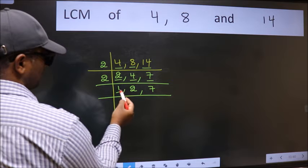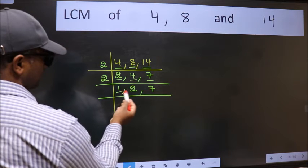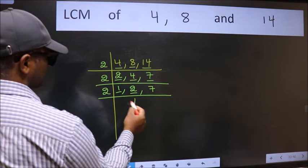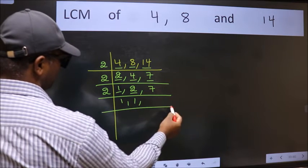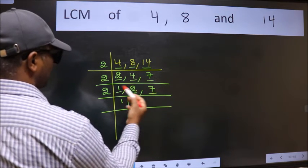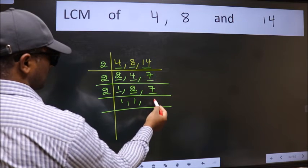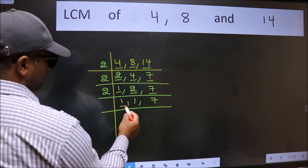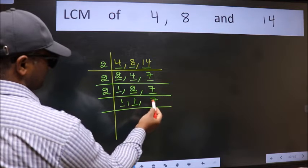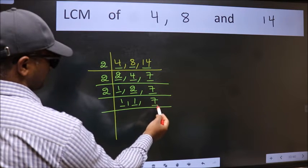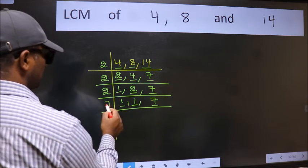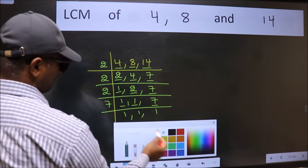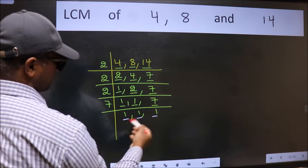Now we got 1 here, so focus on the next number 2. 2 is a prime number so 2×1 is 2. The other number 7 is not divisible by 2, so we write it down as it is. Now we got 1 here and here. So focus on the next number 7. 7 is a prime number so 7×1 is 7. So we got 1 in all 3 places.